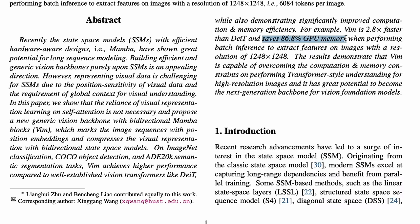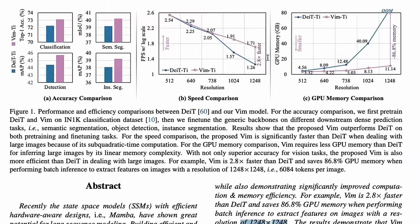The transformer architecture would have hit OOM — out of memory — in this case, while VIM could actually perform batch inference to extract features on images of resolution 1248 by 1248. This is huge and shows an exciting future. I've been impressed by previous Mamba papers, but showing this kind of scale and efficiency with vision is completely insane and exciting.